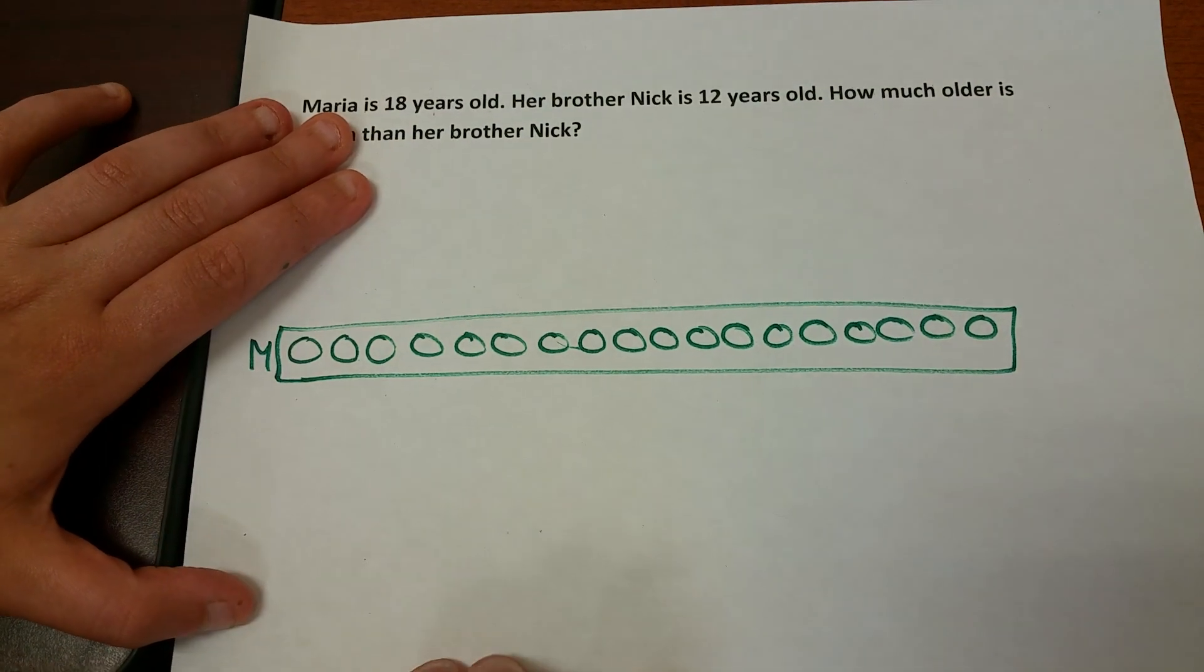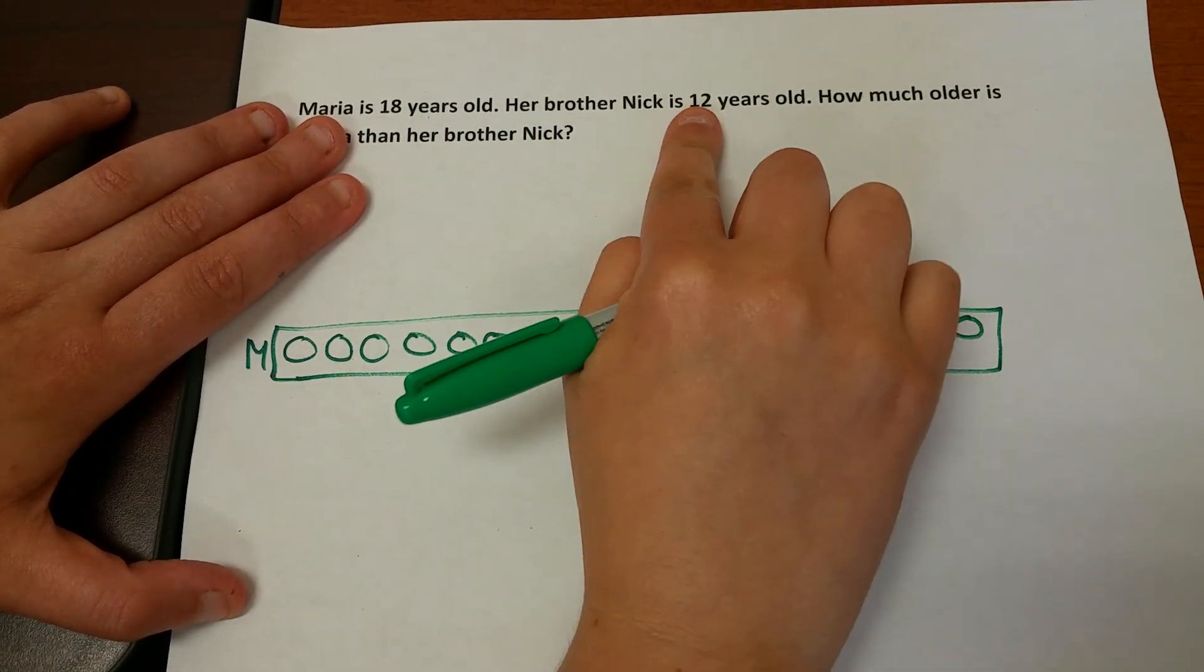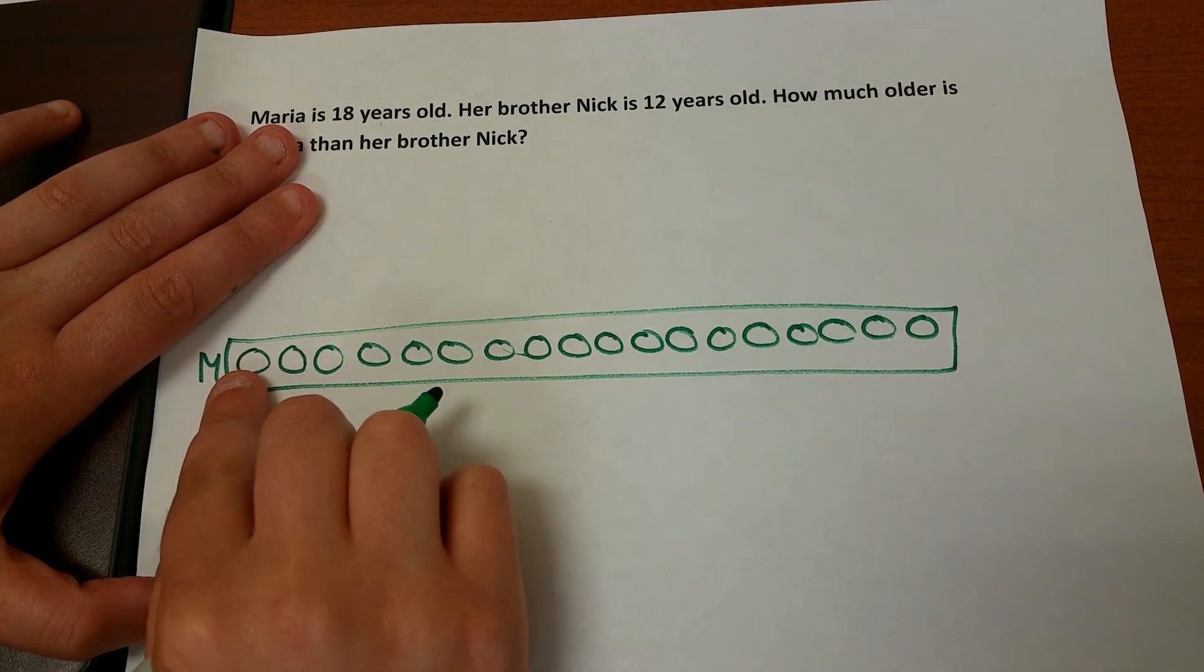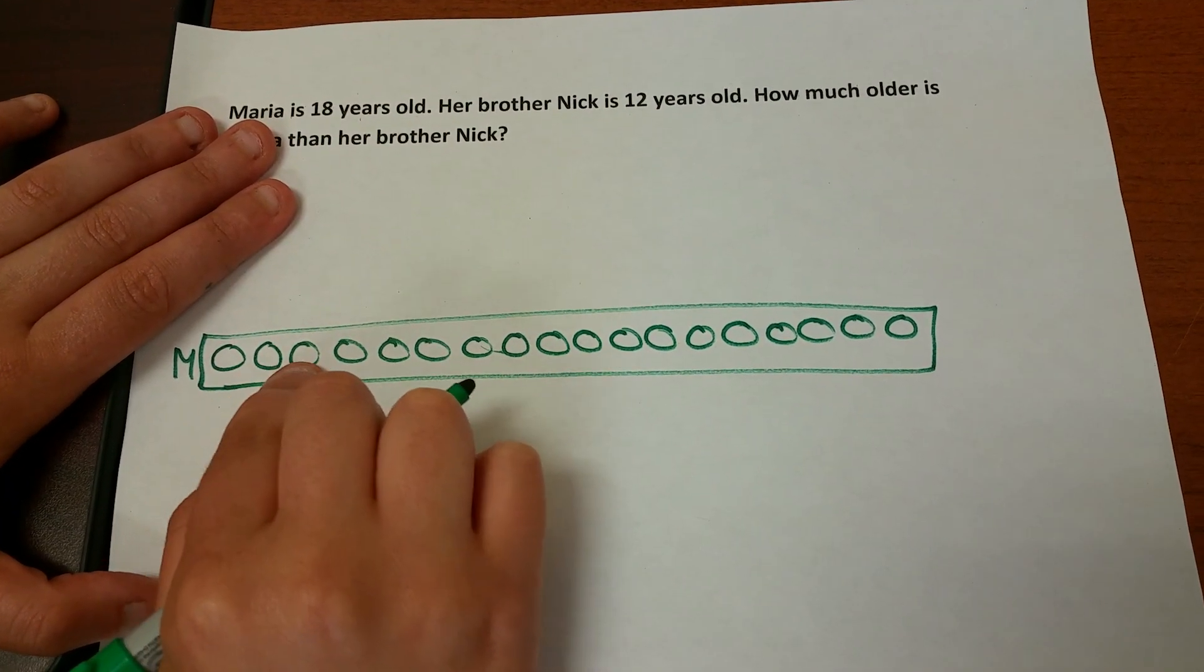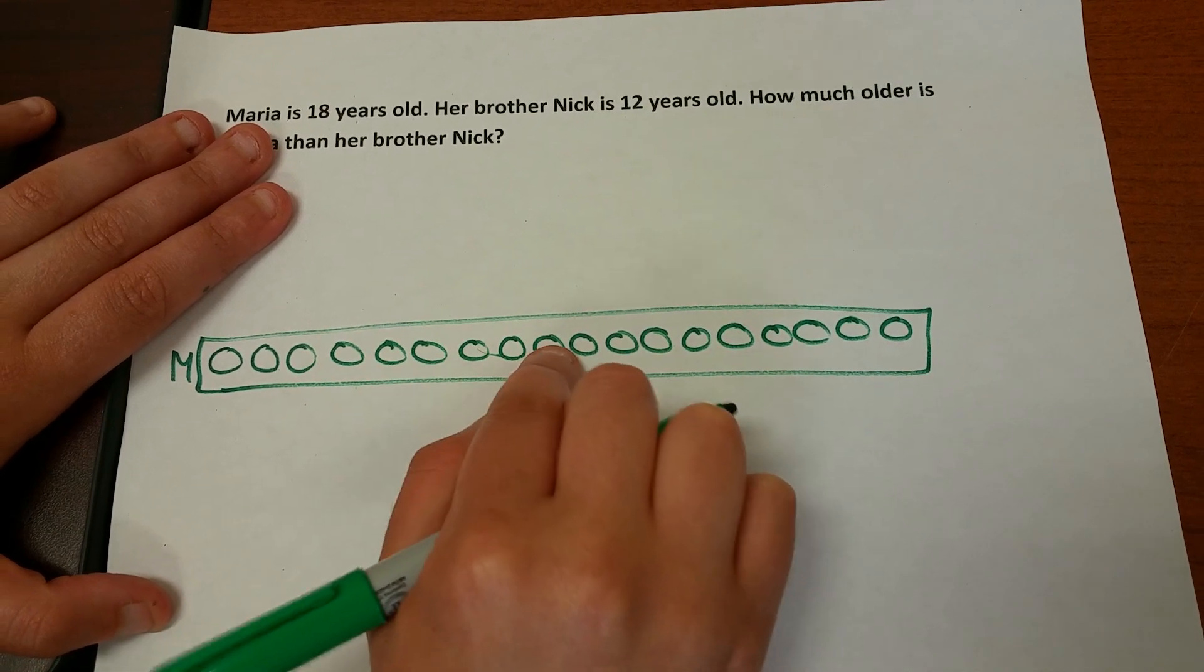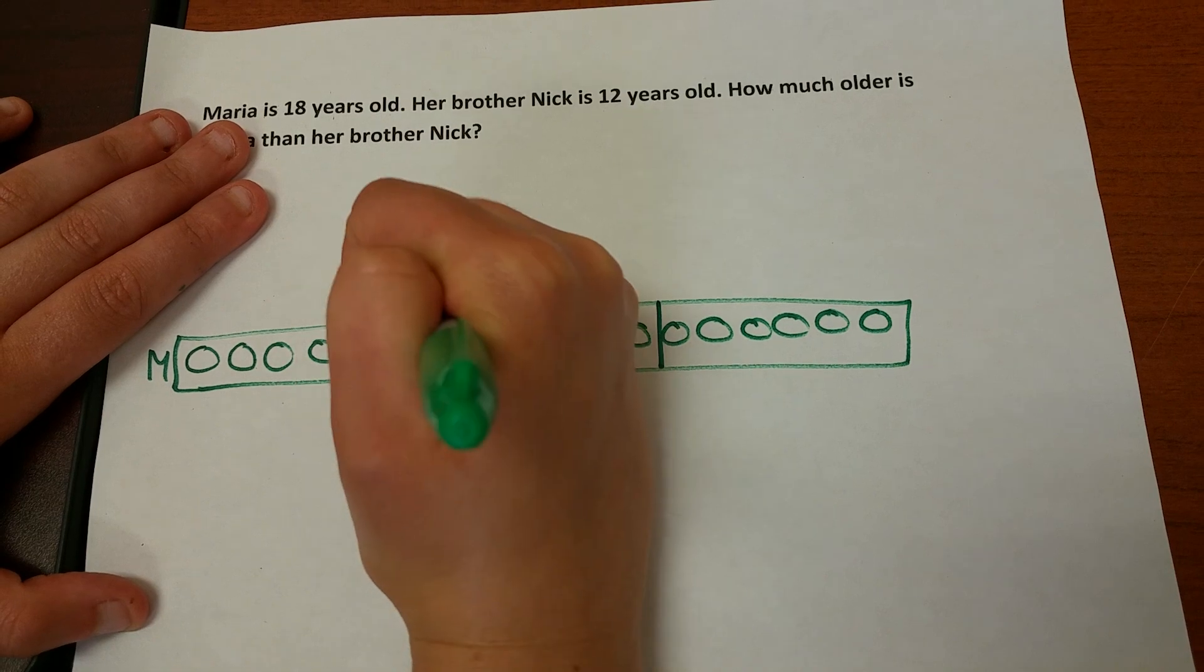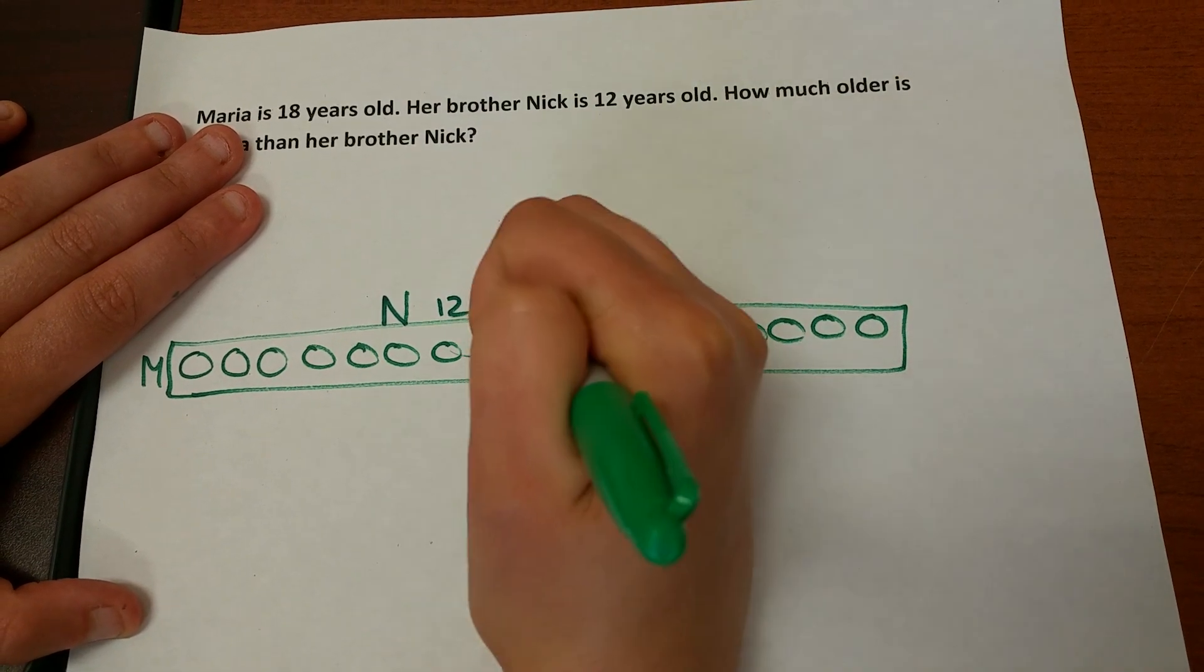That's Maria. And I want to know how much older she is. Her brother Nick is 12, so instead of drawing a second tape diagram, I can just cut it in half. Cut it where the 12 is. 1, 2, 3, 4, 5, 6, 7, 8, 9, 10, 11, 12. This is Nick. He's 12. And this is how much older she is.